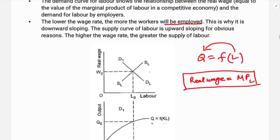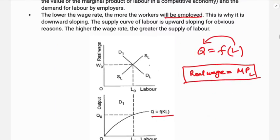In the diagram, Q is a function of capital and labor. Capital is fixed in the short run; labor is the variable factor. So output is determined by the amount of labor employed given the fixed capital.